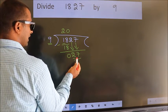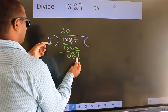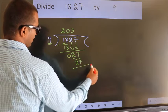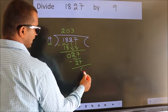When do we get 27? In the 9 table. 9 threes, 27. Now we subtract. We get 0.